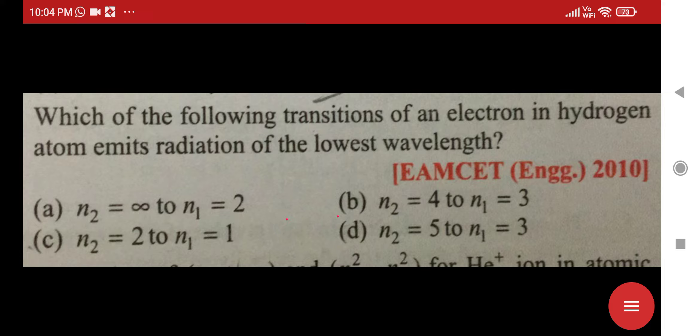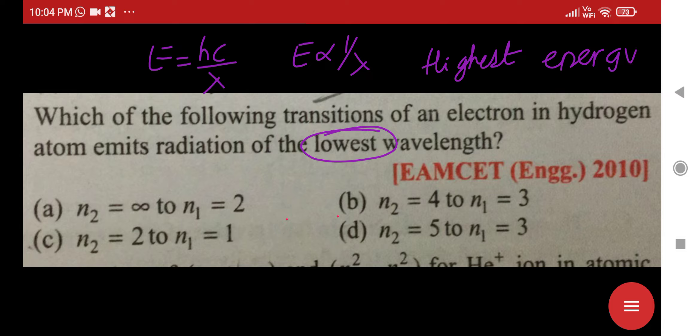Here you remember energy is equal to hc by lambda. That means energy is inversely proportional to wavelength. And you mentioned lowest wavelength, that means highest energy. The question is about highest energy. Lowest wavelength means highest energy.